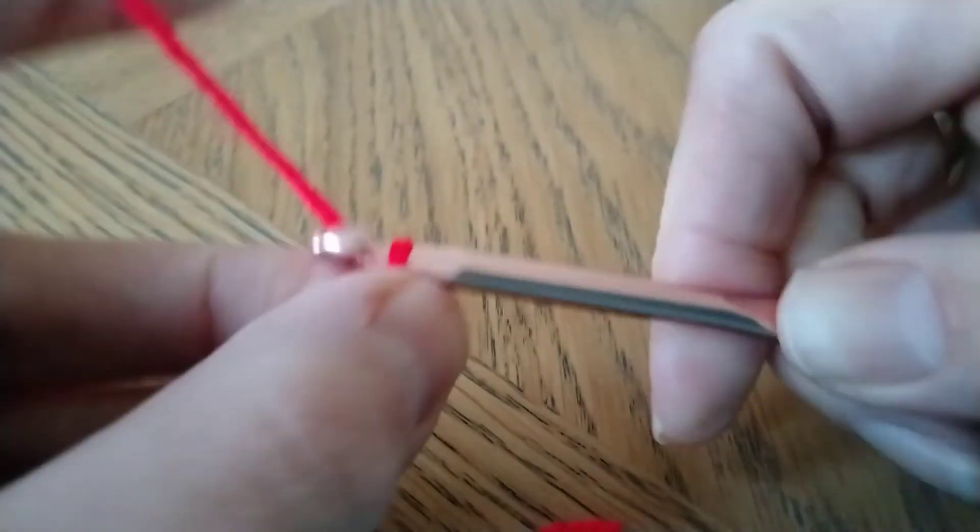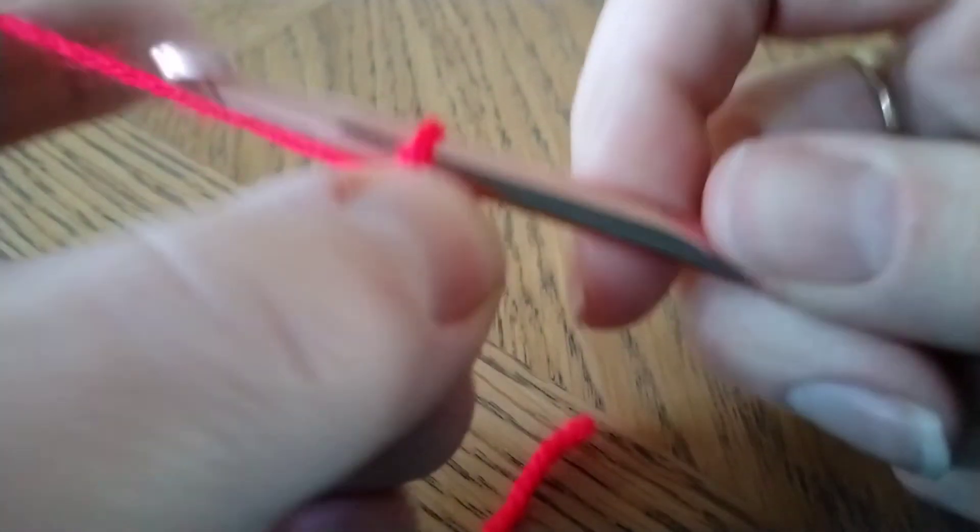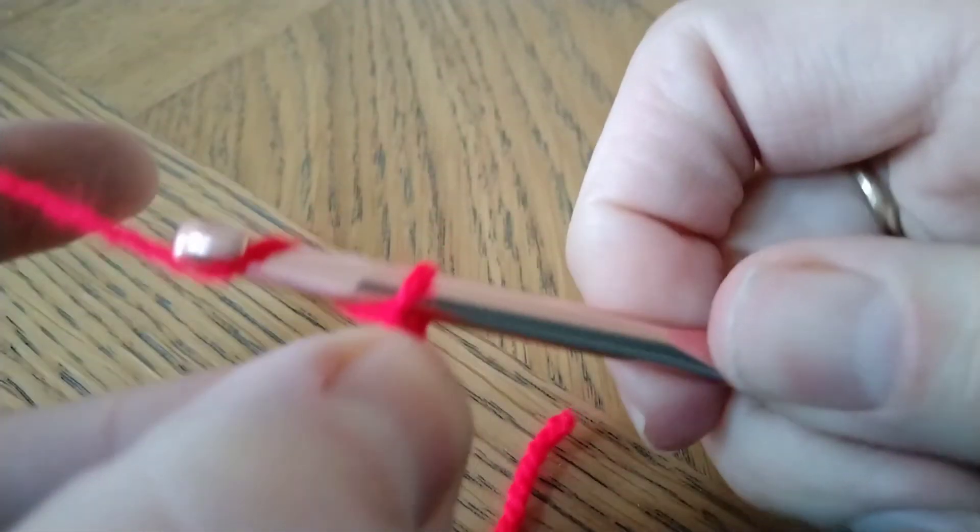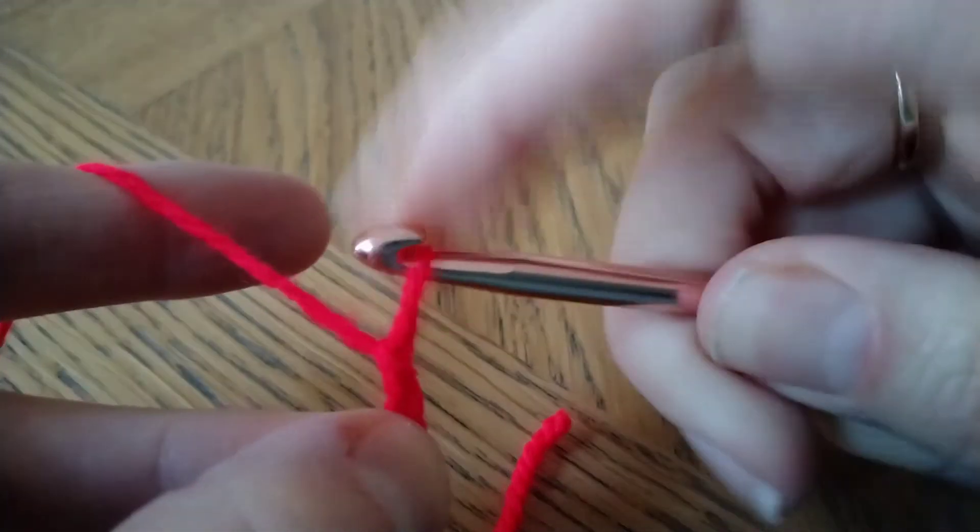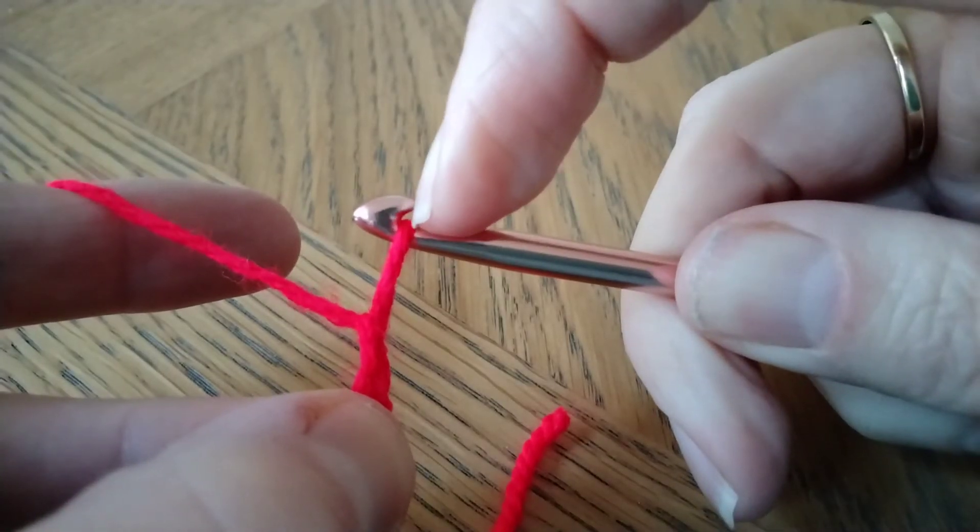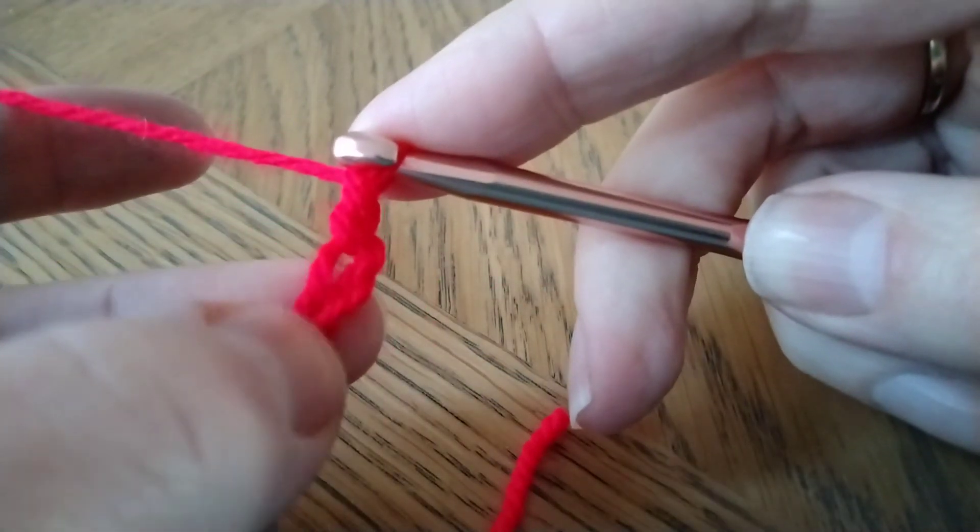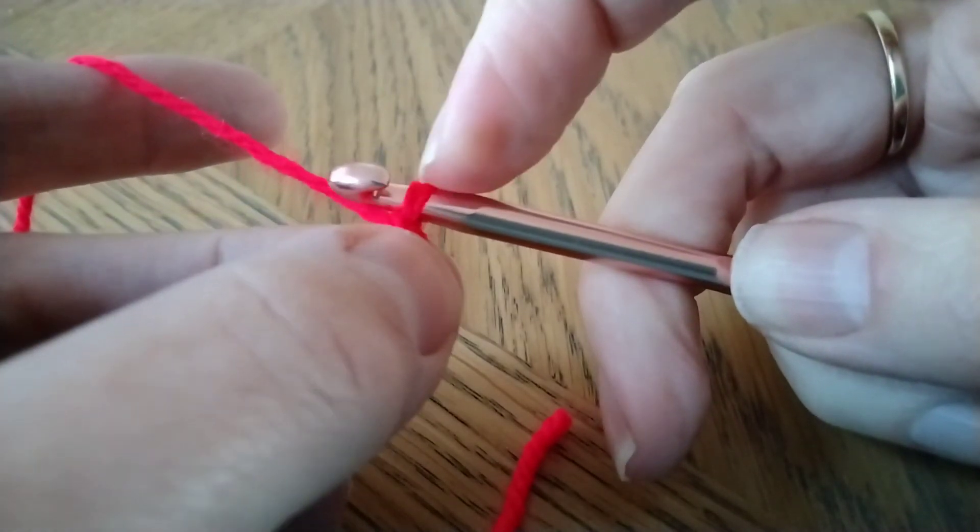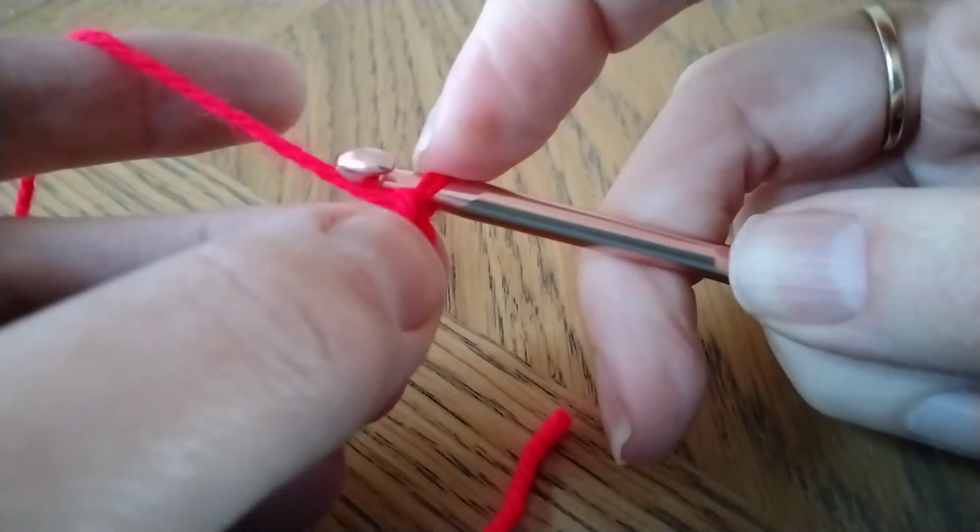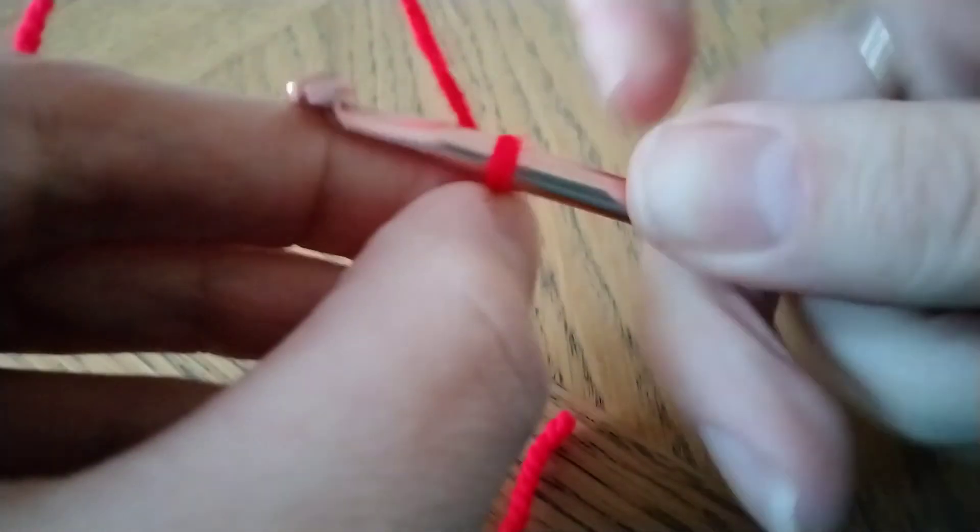A little tip is when you're following a pattern and you're asked to chain, the chain actually on the hook, so this particular one right here, isn't counted as a chain. So one, two, three, four. You don't count this one. So if you're asked to chain 30, you will chain 30 that are here below the hook. The one on the hook doesn't count.